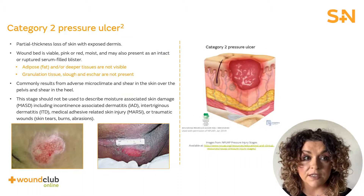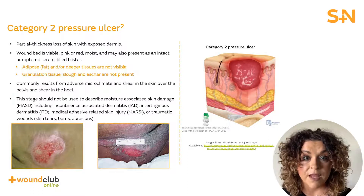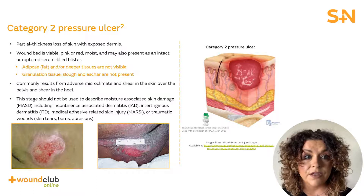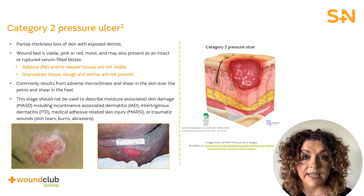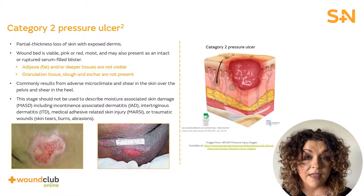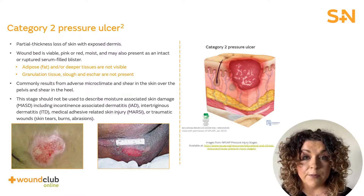Category 2 pressure ulcers are classified as having partial thickness loss of skin where the dermis is exposed. This means that the wound bed is exposed and may appear as pink or red and often following the breakdown or rupture of a blister. It's important to note that there will be no deeper tissue involvement at this stage and that the wound bed will be free of slough and eschar. Sometimes category 2 pressure ulcers can be confused with moisture associated skin damage. Therefore, understanding the cause is really important. There are separate staging and classification terms for moisture associated skin damage, which will be covered in a future Wound Club online module.